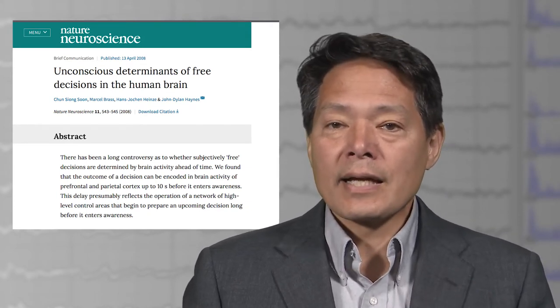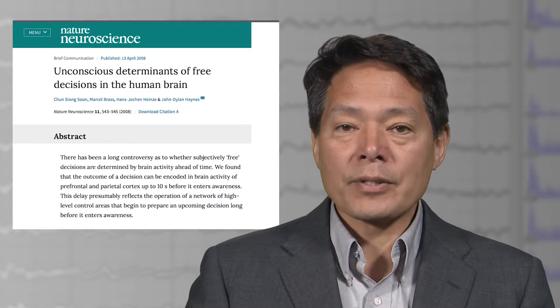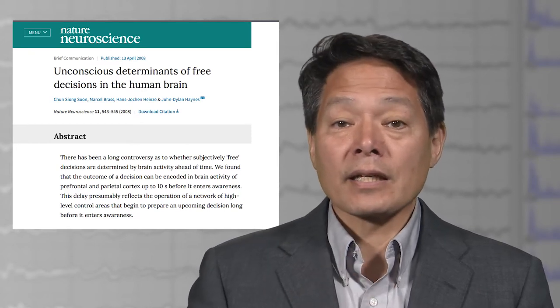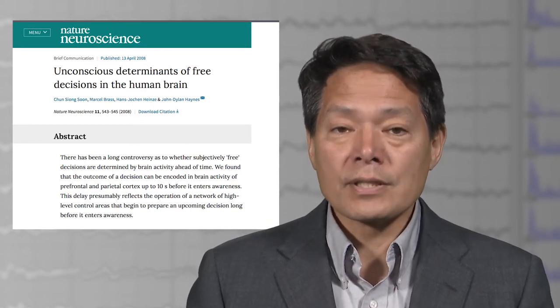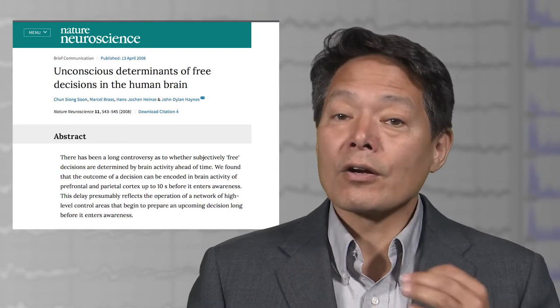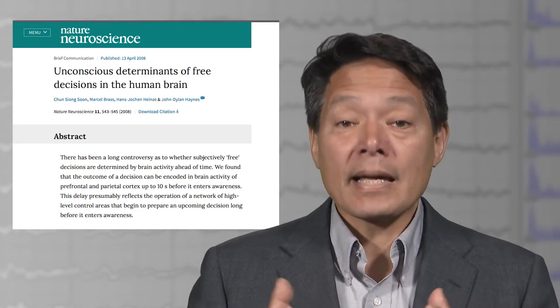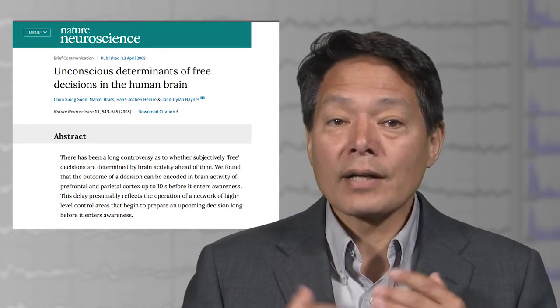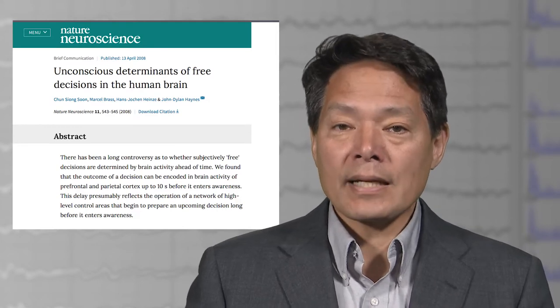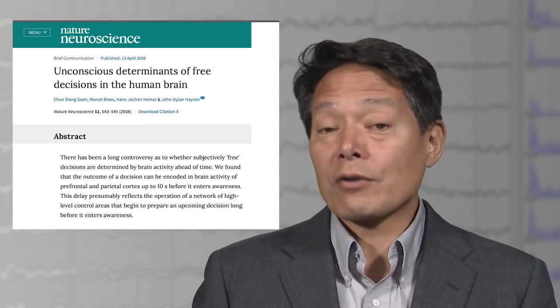It's unlikely that a brain state 10 seconds before an arbitrary meaningless decision such as picking left or right already computes that decision. Instead, an earlier brain state might bias that decision. There are lots of cases where pre-existing biases affect later outcomes without ruling out choice.